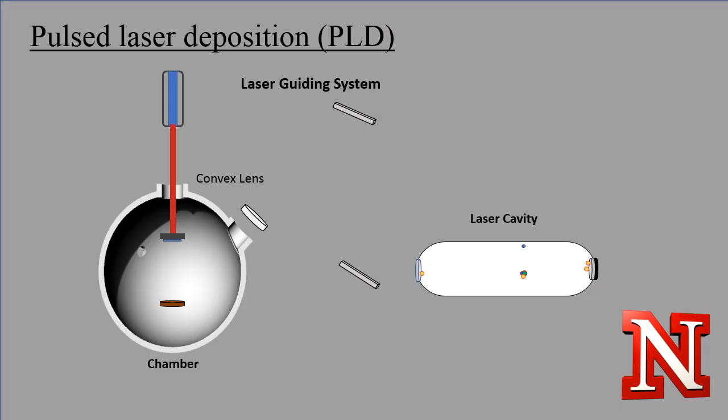PLD works by having a high-powered laser hit a target material, and when that happens it will break apart the molecules and create high-energy plasma. Plasma has positive ions and free electrons. This means the plasma will stick onto a crystalline substrate above the target.